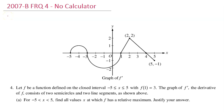In this video, I will walk you through free response question number 4 from the 2007 Form B AP Calculus exam. Let f be a function defined on the closed interval from negative 5 to positive 5, with f of 1 equal to 3. The graph of f prime, the derivative of f, consists of two semicircles and two line segments as shown above. Part A: for the interval from negative 5 to positive 5, find all x values for which f has a relative maximum.